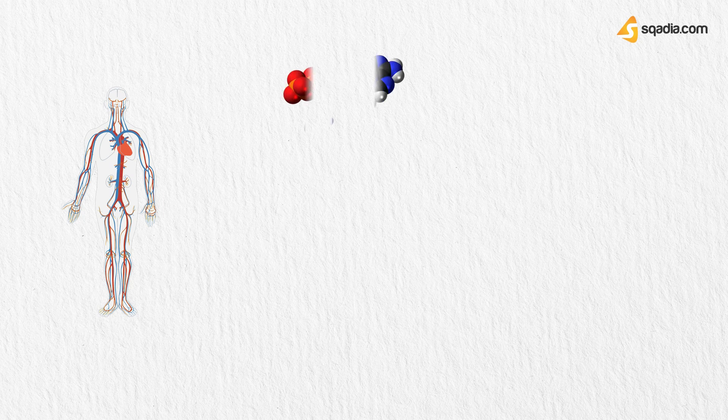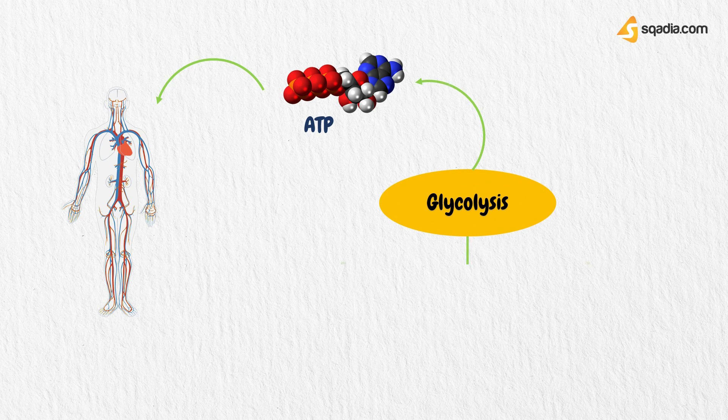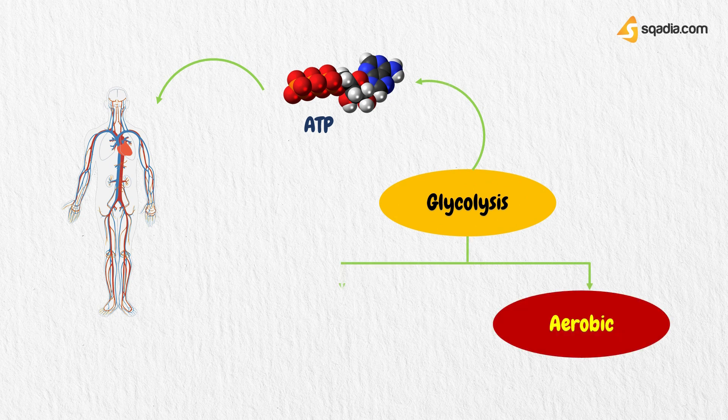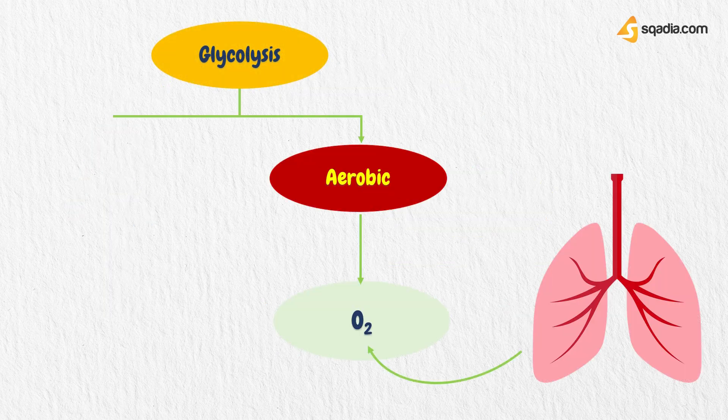The human body is an extremely complex structure with a multitude of processes and reactions occurring simultaneously every moment. Whether we are sleeping or awake, working or resting, it requires a constant supply of energy every second of every day. This energy is provided by ATP, produced in each cell by glycolysis, either aerobic — in the presence of oxygen — or anaerobic — in the absence of oxygen. The oxygen required by aerobic glycolysis is transported from the lungs to the rest of the body by the red blood cells.